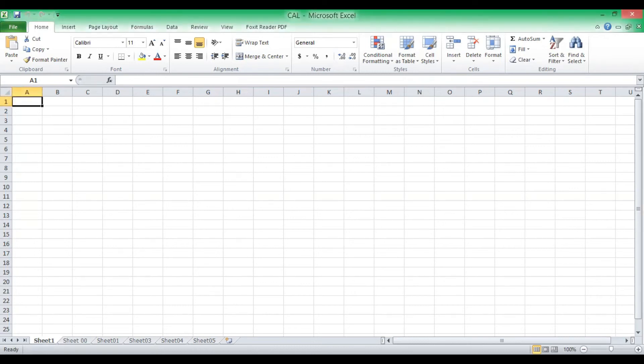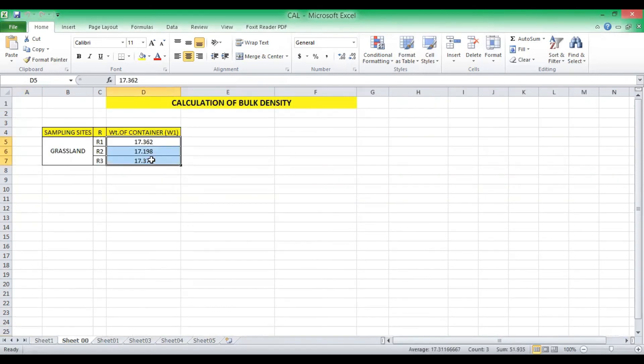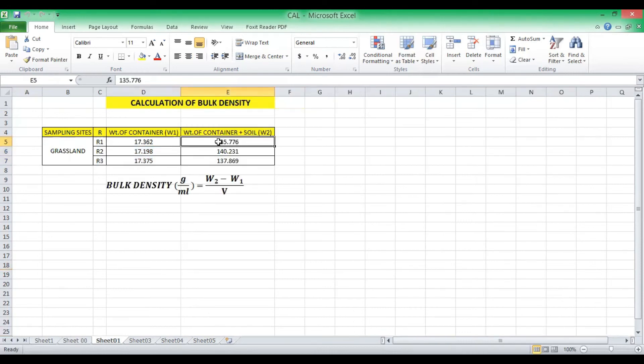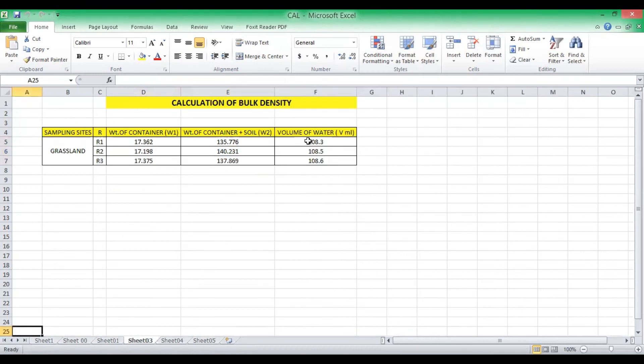As shown earlier in the slides, these are the weight of the container or the vial for three different replicates. And these are the weight of the container and the soil, which is W2. And these are the volume of the water required to fill the container or the vial for all the three different replicates. So basically, these are the three readings that we have generated earlier.